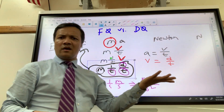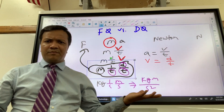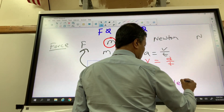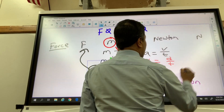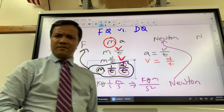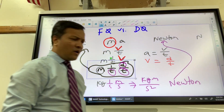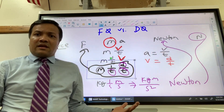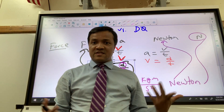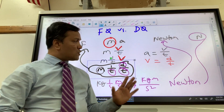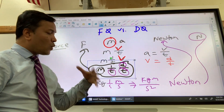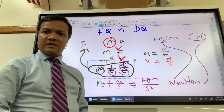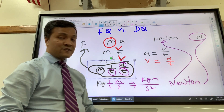Since kilogram·meter per second squared is a tongue twister, we give it a name. The SI unit is named after Sir Isaac Newton, and the unit symbol is N. Gravity was the first force discovered, in 1665, and Newton discovered it — that's why the physics community named the unit after him.